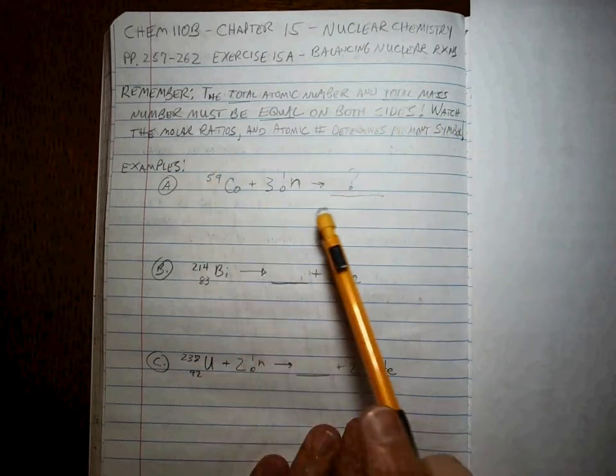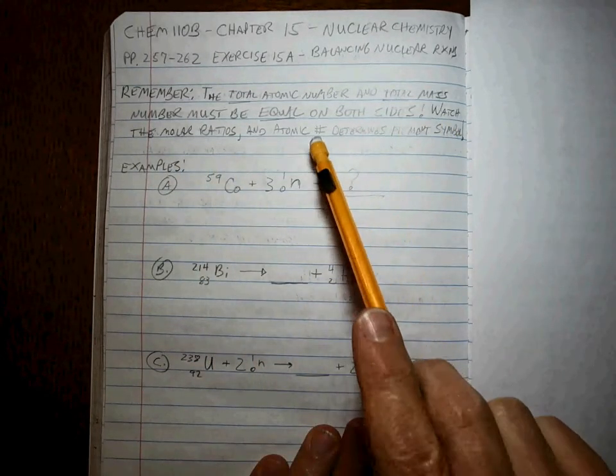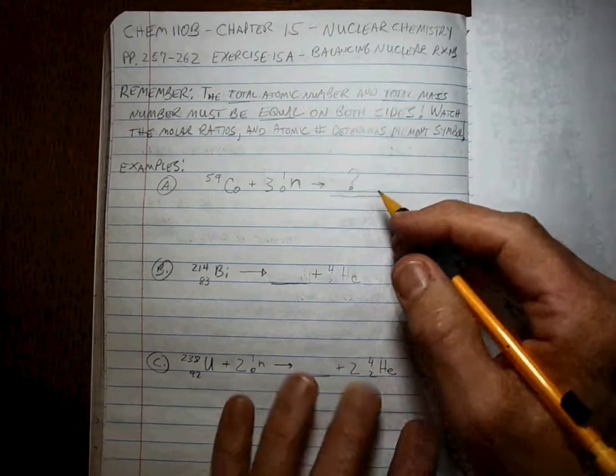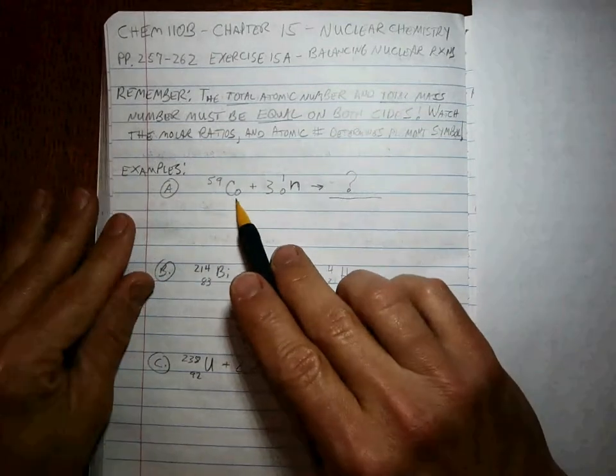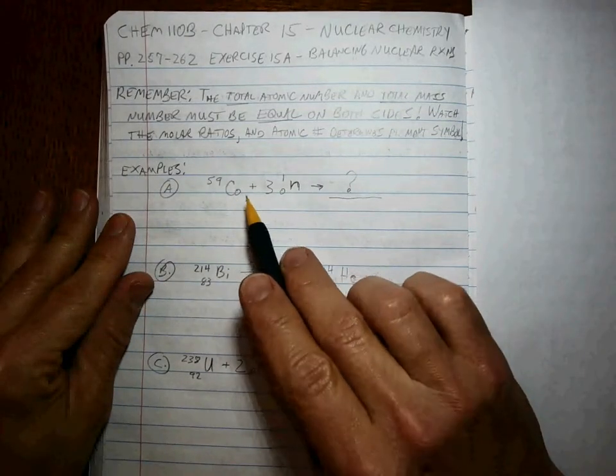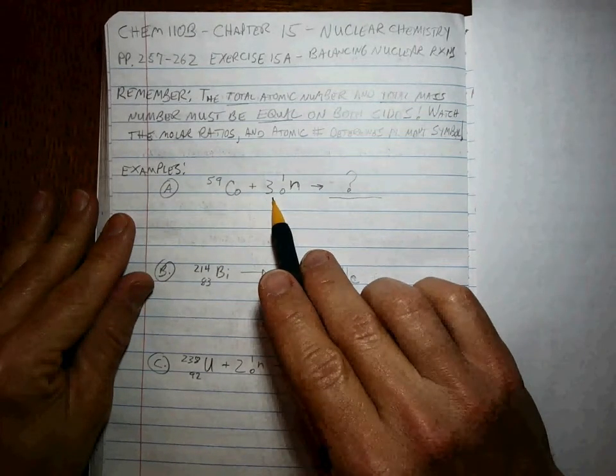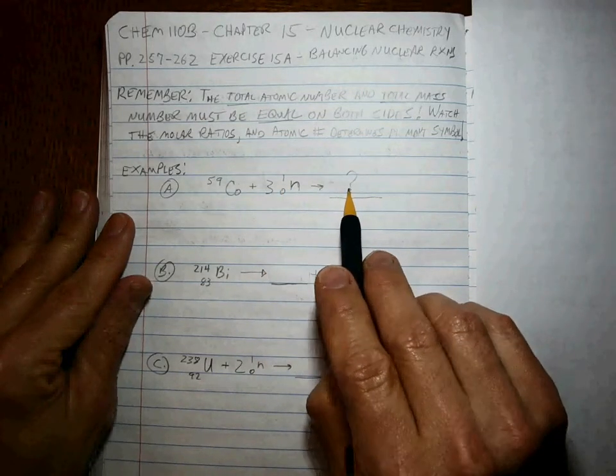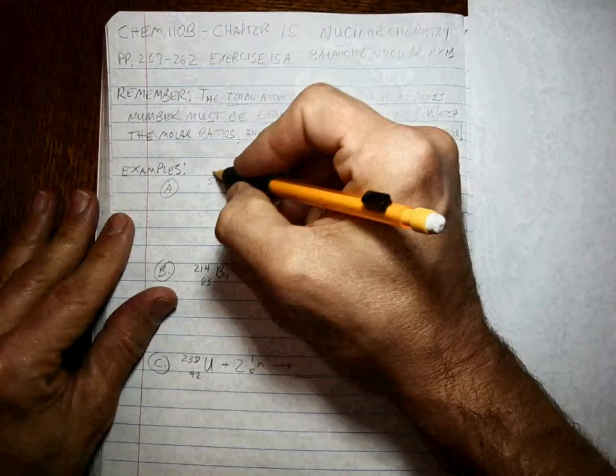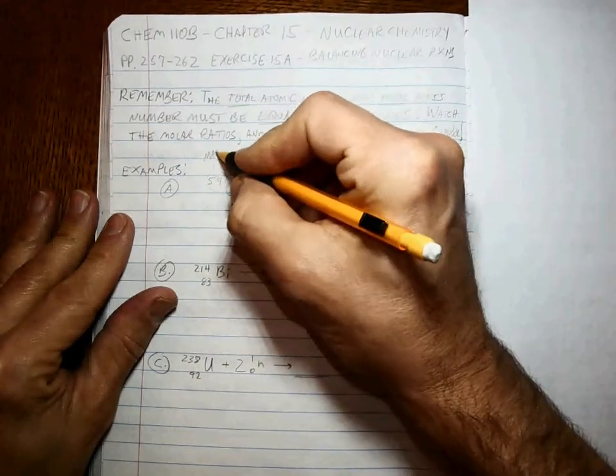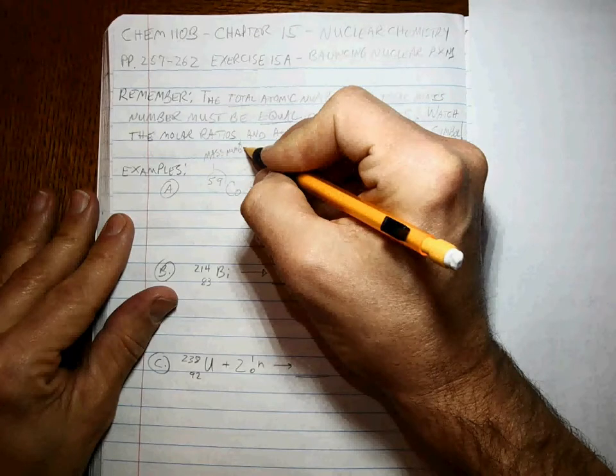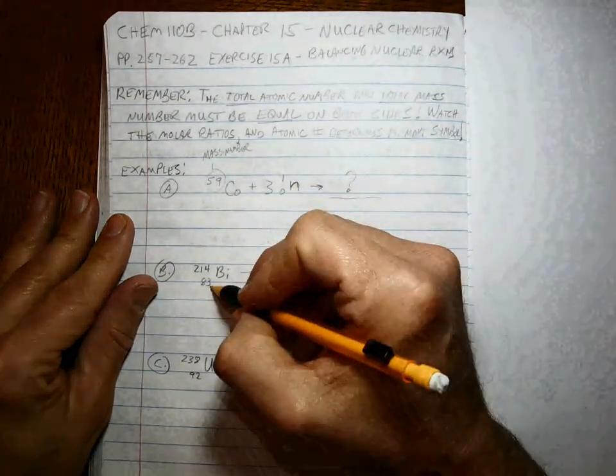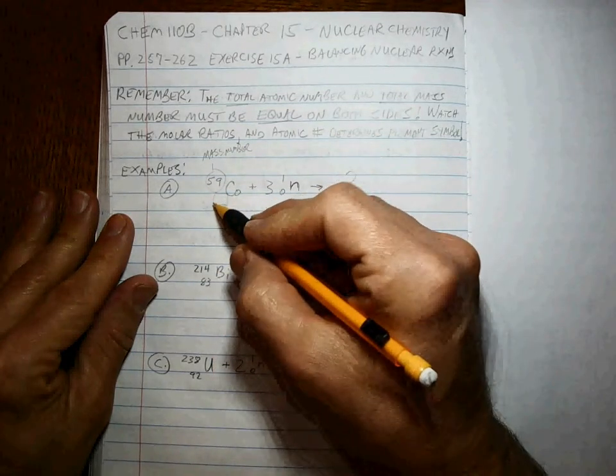Watch your molar ratios and remember that the atomic number is the thing that determines the elemental symbol. So we've got going here 59Co plus three of these things makes what? Well, you gotta remember that this number up here is the mass number, and every element like this one has a number down here, and that's the atomic number.